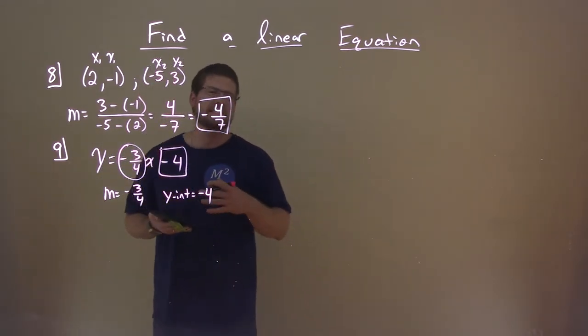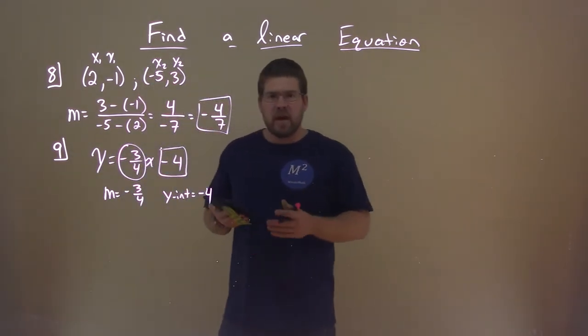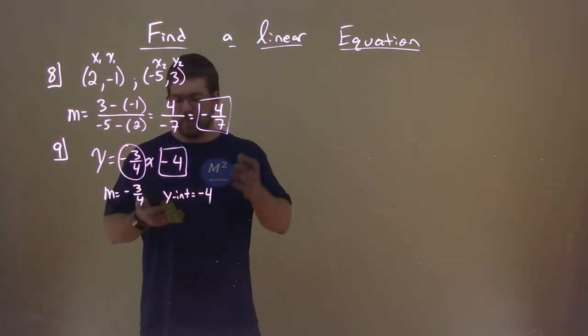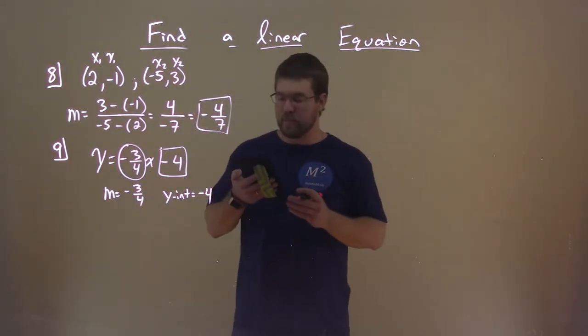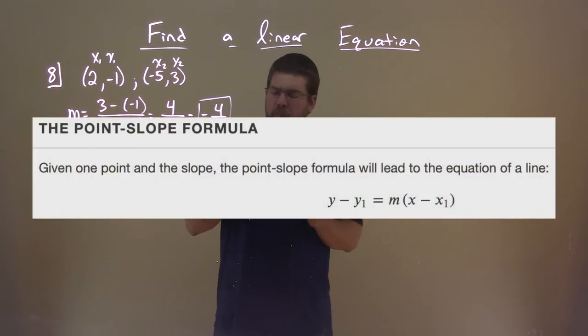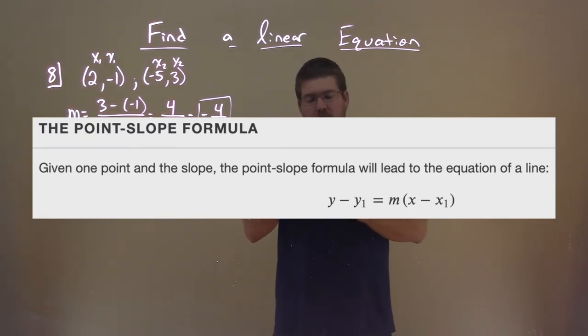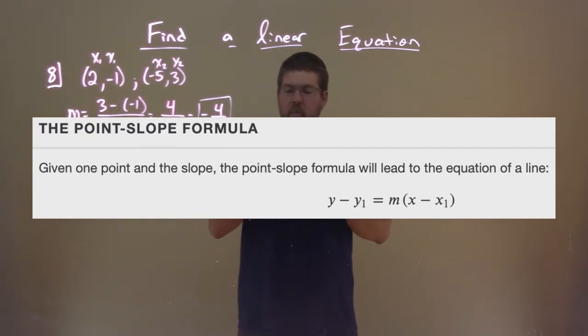Now there's other ways that you will see equations of lines. And one of them, besides slope-intercept form, is the point-slope form. The point-slope formula, given one point and the slope, will lead to the equation of a line: Y minus Y1 equals M times, in parentheses, X minus X1.